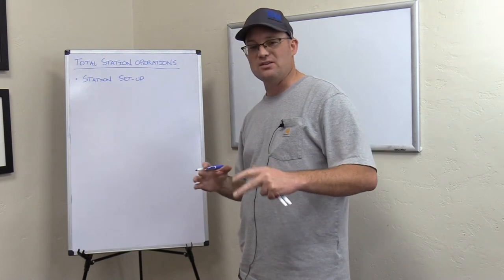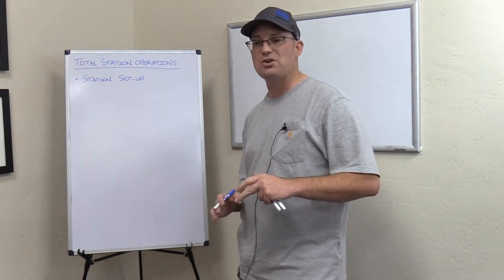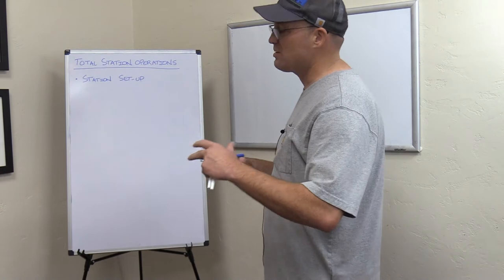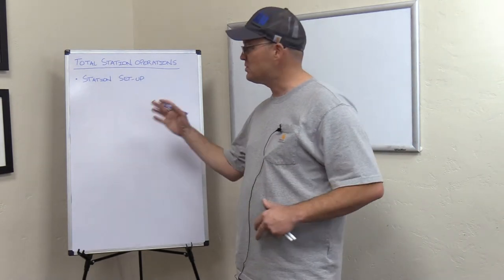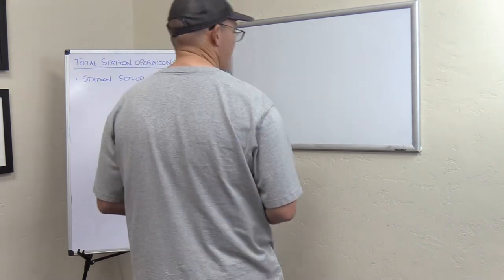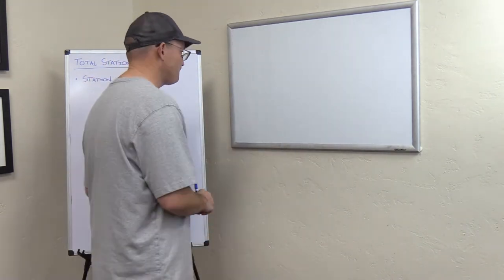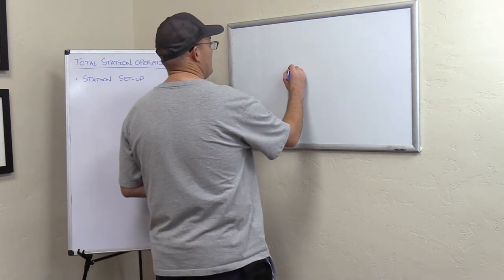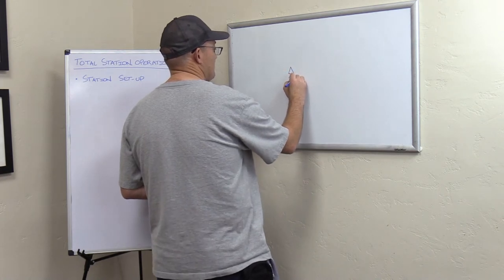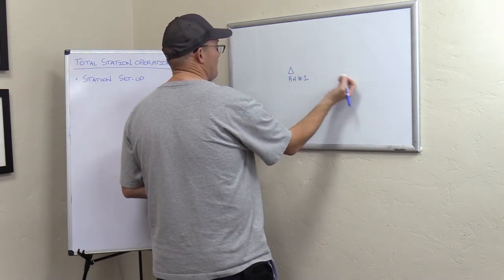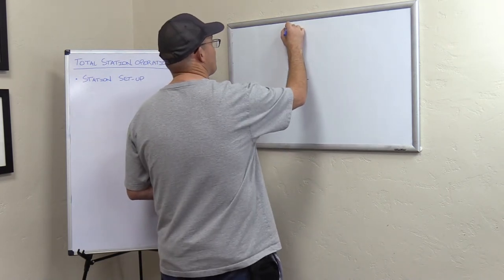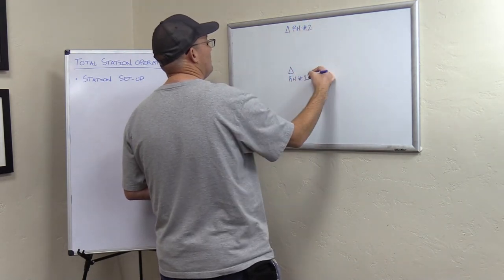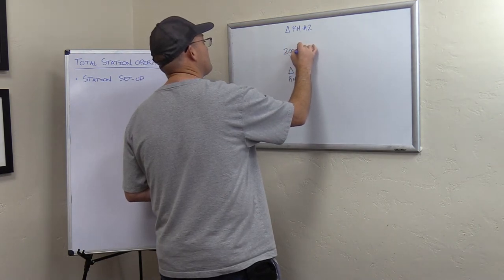We're going to talk about the geometry that's involved, a little bit of the math and the procedure. I'm not telling you in this video how to level a total station — there are other good videos on YouTube about that. This is about what is actually happening, what's the math that's happening when you do a station setup. So let's look at an example. To keep things simple, we're going to assume we have two known points that are inter-visible, that we can see between on the site. We're going to call them RH1 — RH control point number one — and RH control point number two. We're going to pretend that RH2 is exactly due north of RH number one, and that these points are 200.00 feet apart.